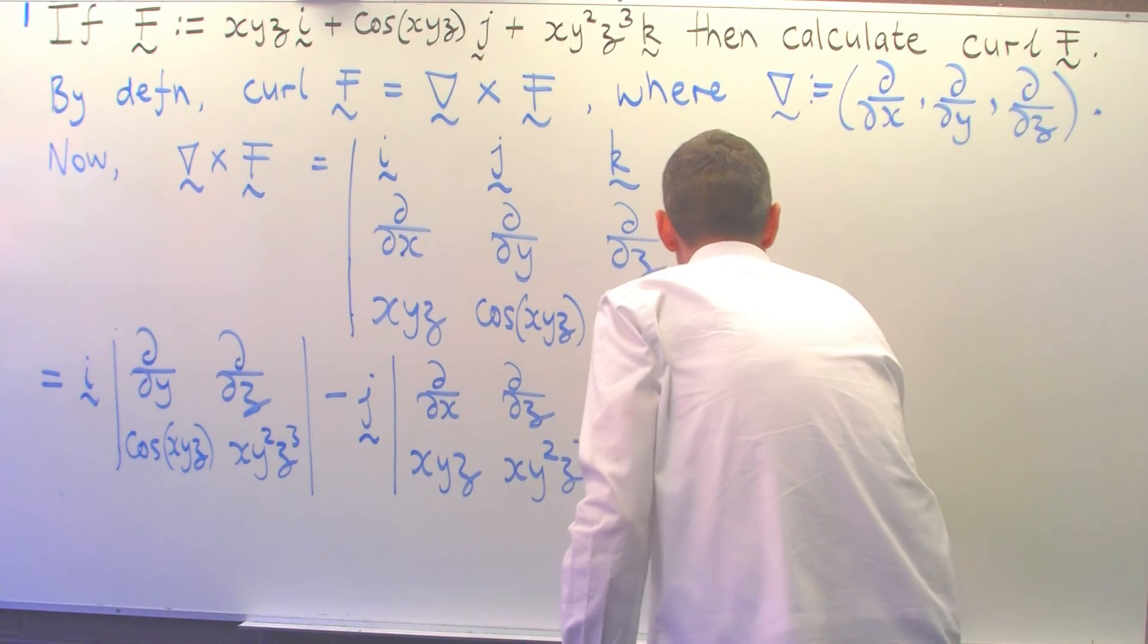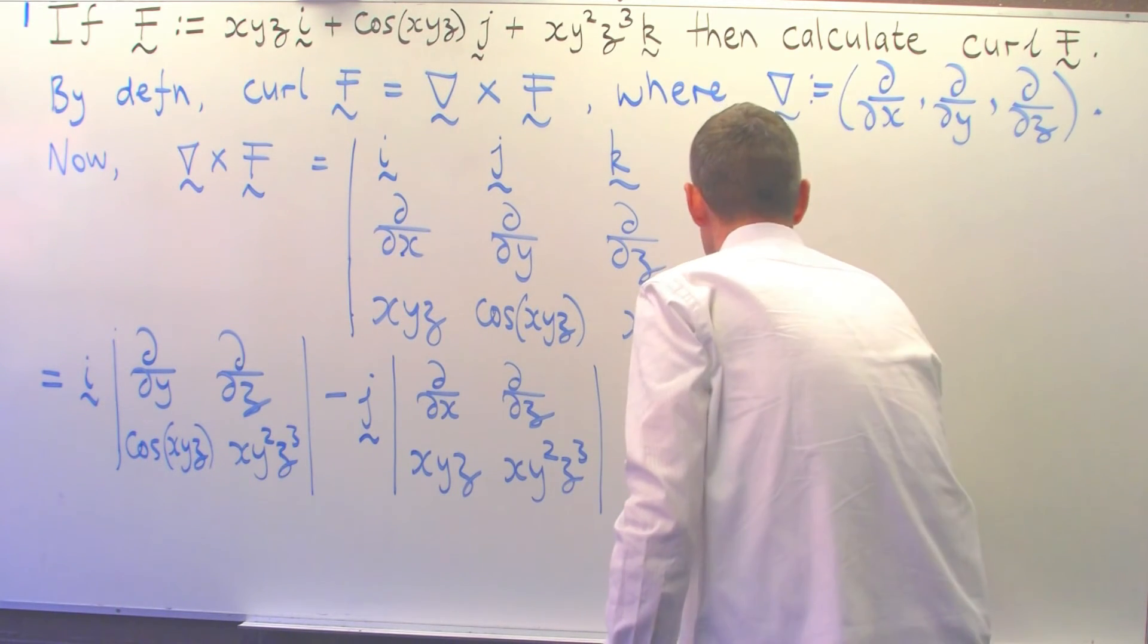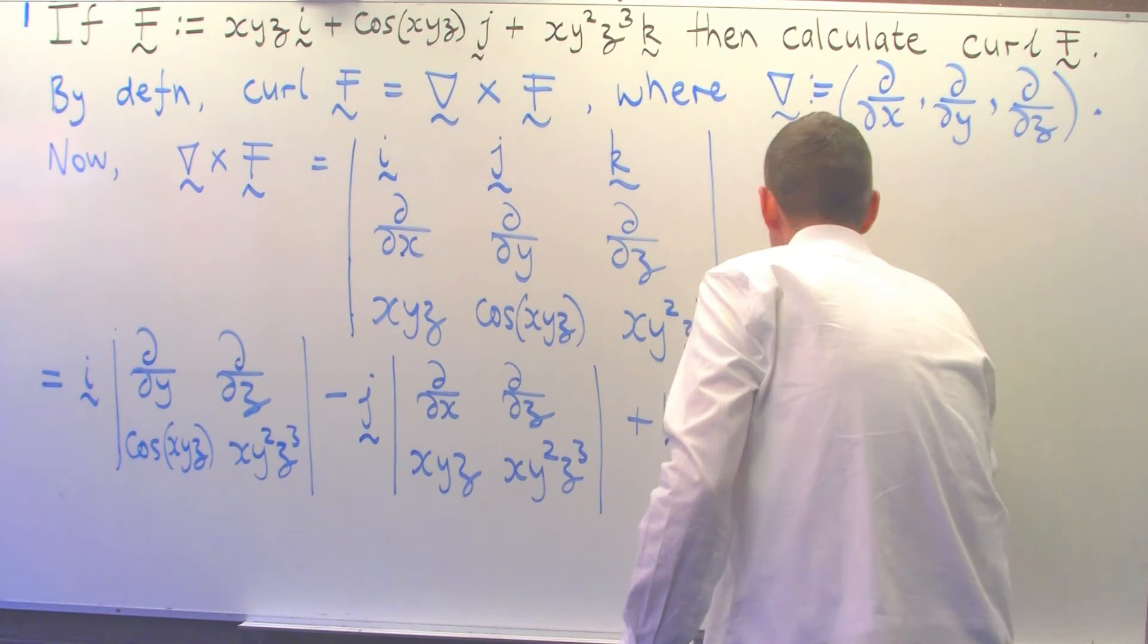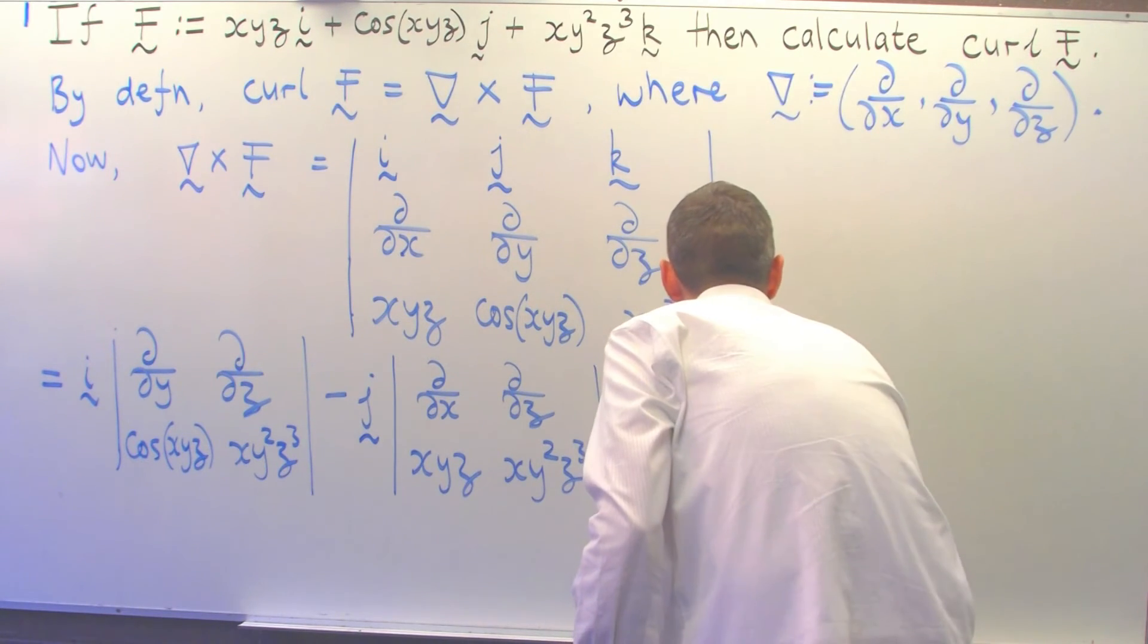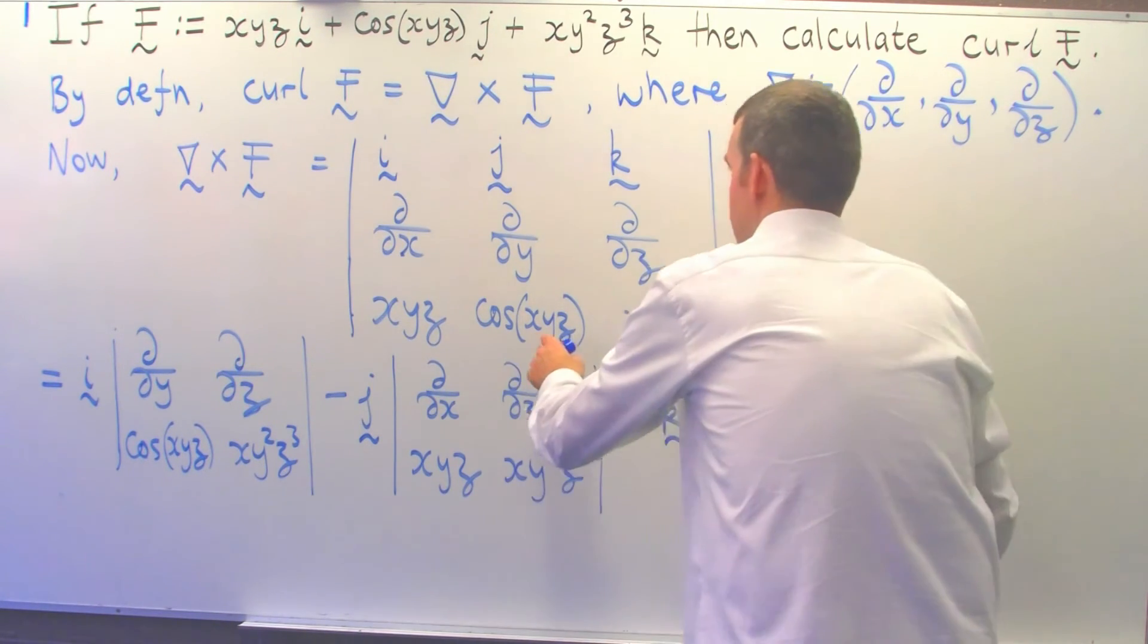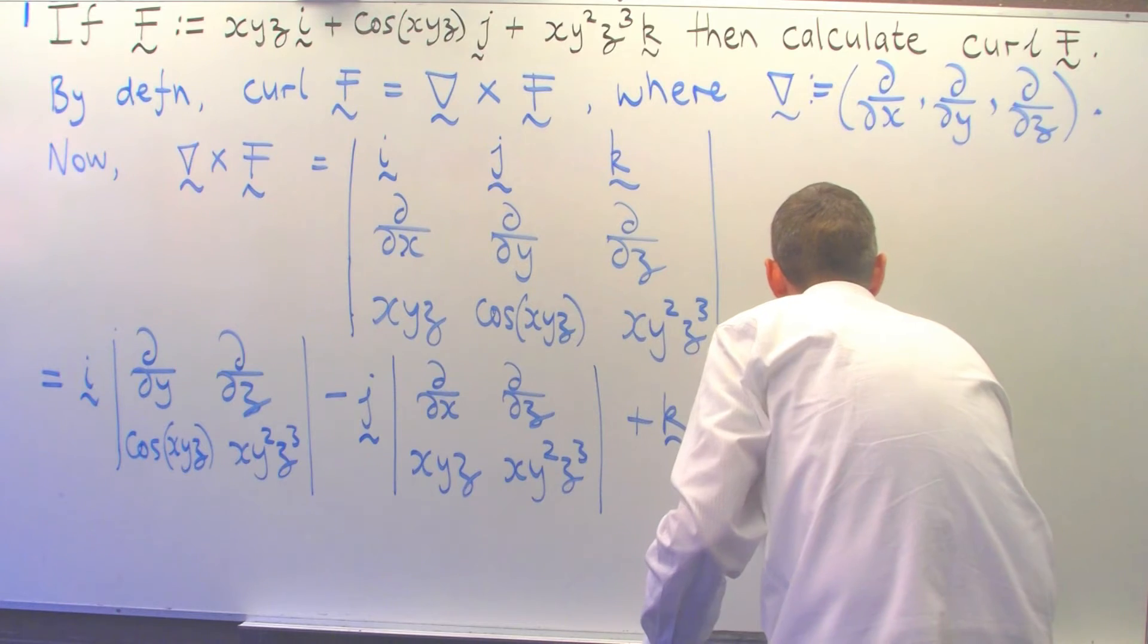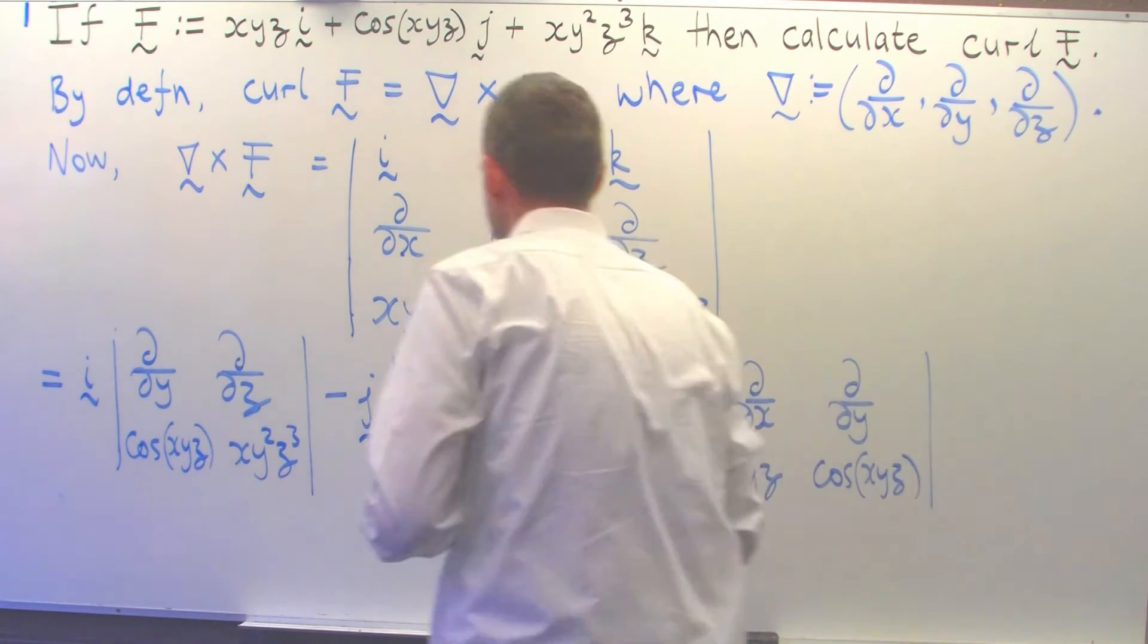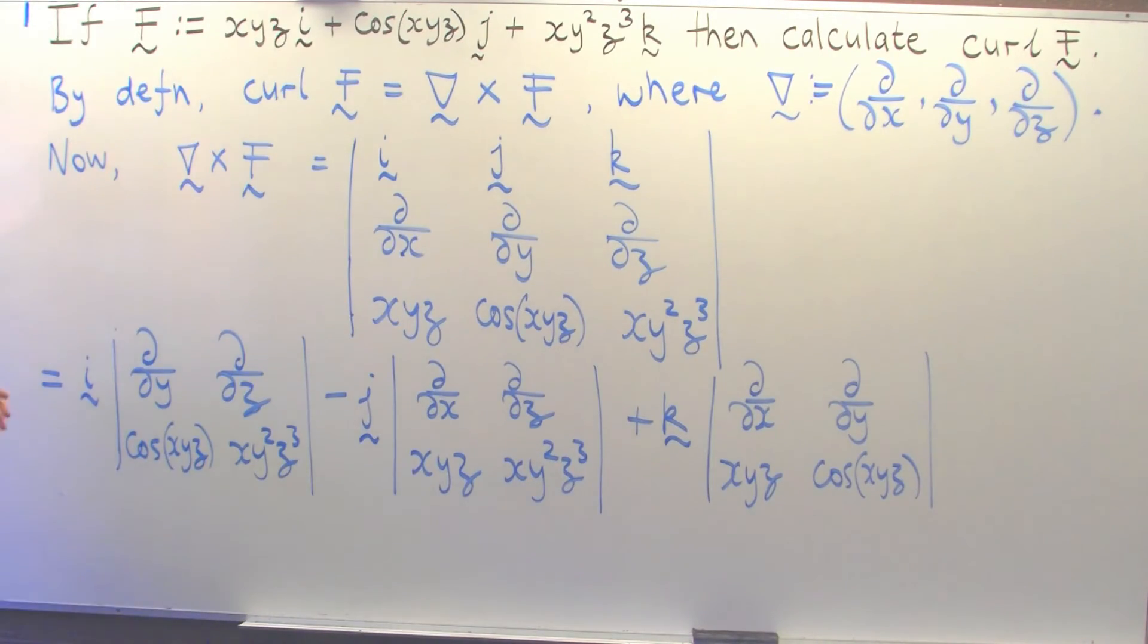That's going to be d/dx, d/dy, xyz and cos(xyz). Now we've broken it down to 2 by 2 determinants multiplied by the i's, j's, and k's.